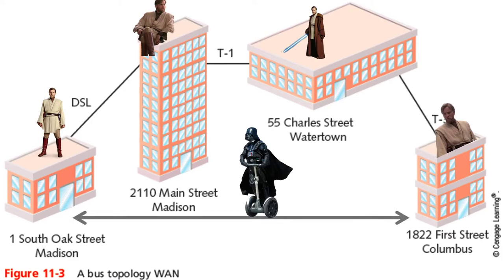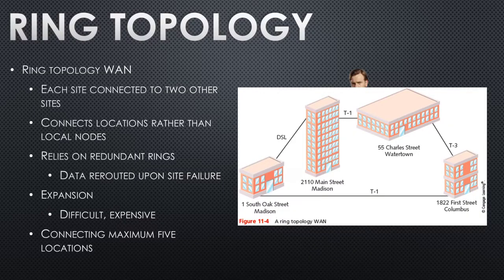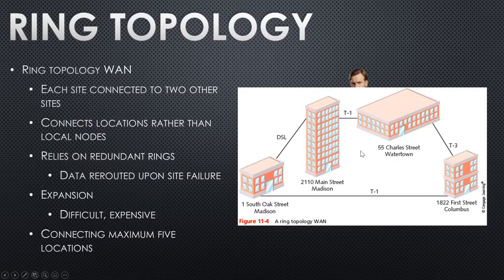If you wanted to go from Oak Street to 1st Street in a bus topology, you can't cut across — you have to go through Charles Street, then the main building, then to Oak Street. If you don't like that, we have ring topology, which adds one more line at the bottom, allowing you to go either direction in the circle. Ring topology is kind of gone from small network design but still exists in WAN scenarios.